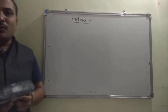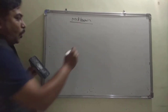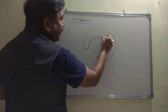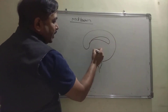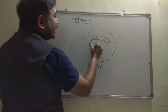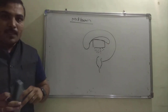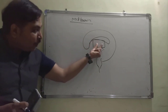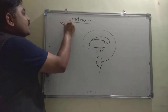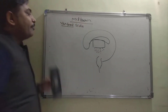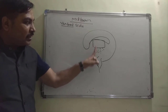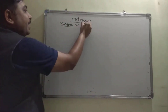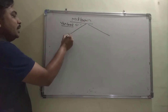Now the second major division is the midbrain. It is located on the ventral side of the diencephalon — below the diencephalon. The midbrain is divided into two parts: optic lobes and cerebral peduncle.